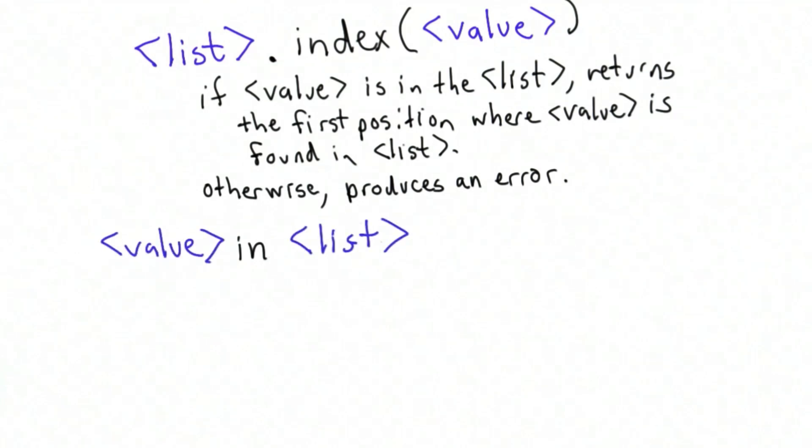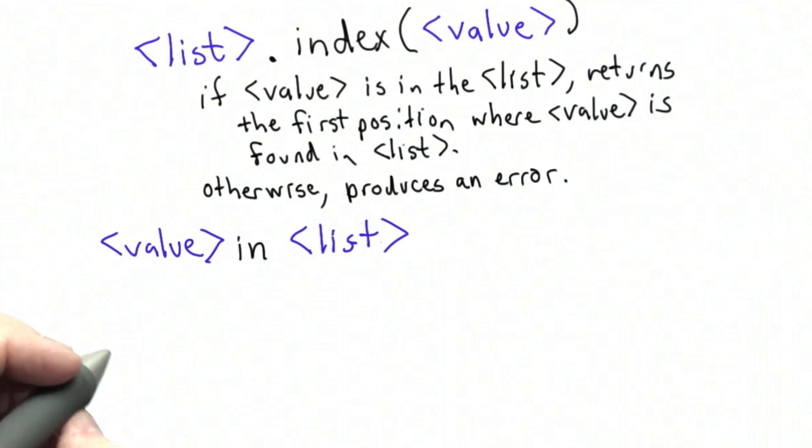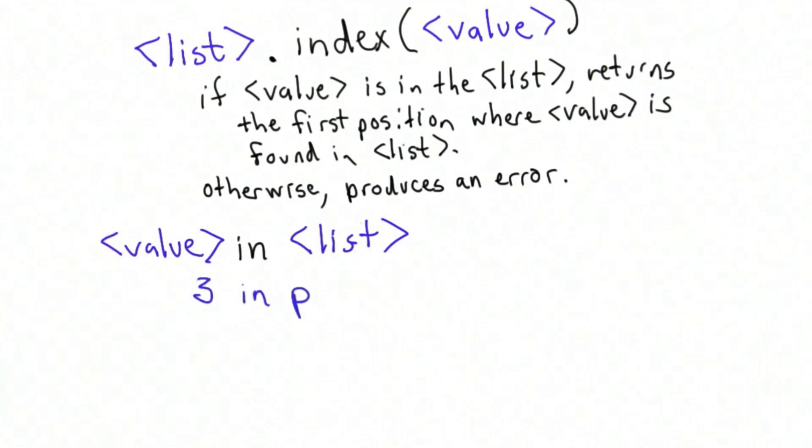The syntax is to have a value to the left of the in word, followed by the list. The syntax is a bit strange compared to the other things we've seen in Python. It doesn't look like a procedure call, but it's very natural in terms of how it corresponds to how we would say this in English. If we say something like is 3 in the list, we would write that in Python as 3 in p.